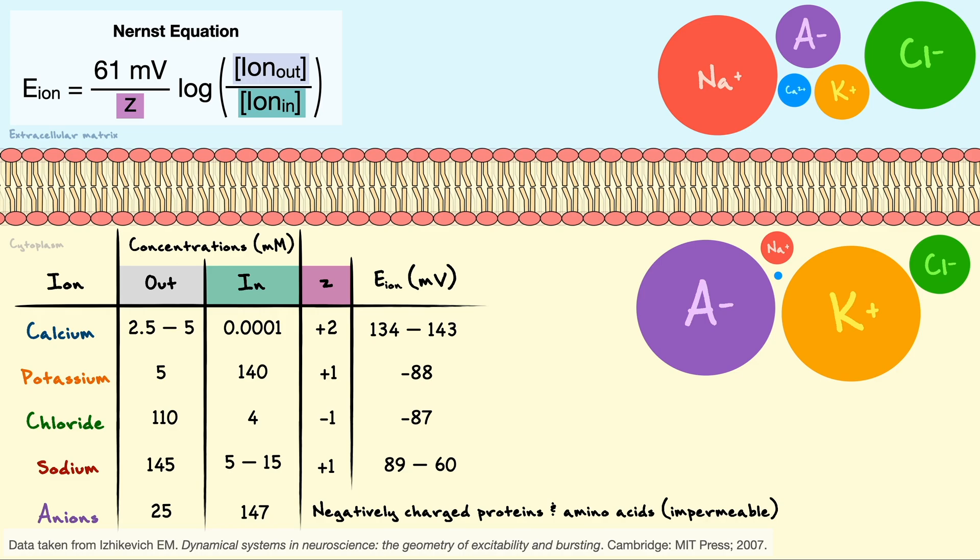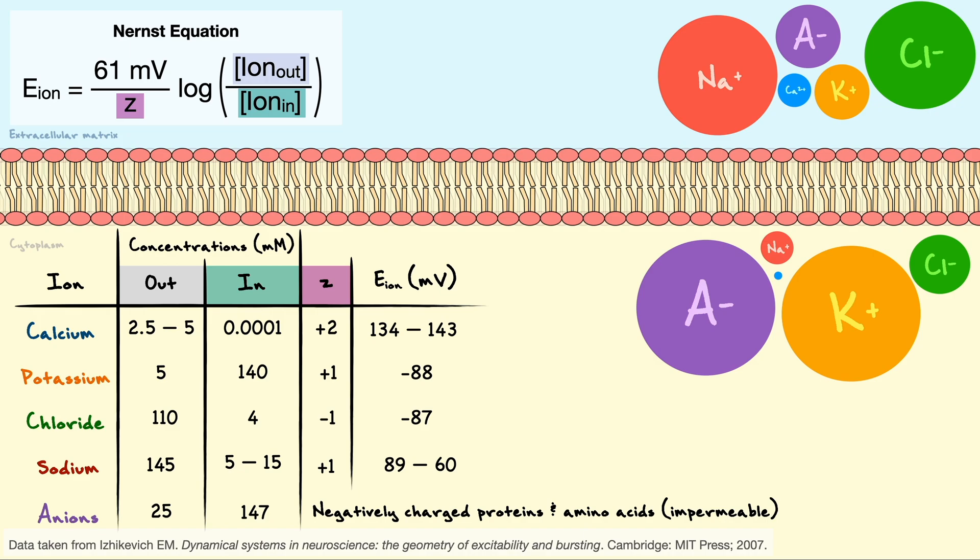As you can see from the equilibrium potential column, the values greatly change depending on the ion. Sodium, for example, would be perfectly at equilibrium if the membrane potential was between positive 89 and 60 millivolts, whereas potassium would be at electrochemical equilibrium if the membrane potential is at negative 88 millivolts. As we will see time and time again in this video, this contrast in equilibrium potential between potassium and sodium is exactly what fuels the propagation of the signal.